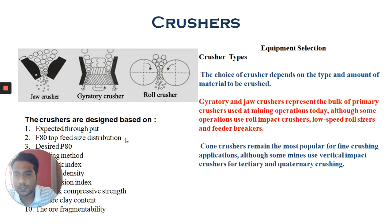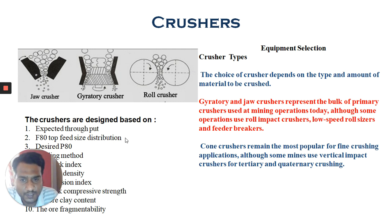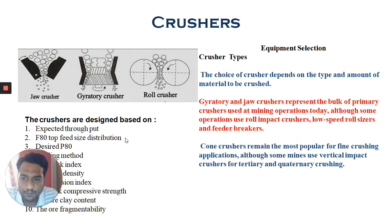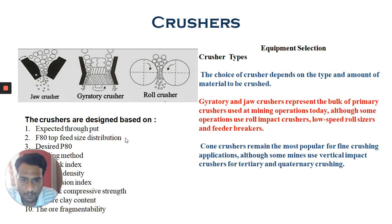This overview covers the crusher types, working principles, and importance in mineral processing, which you may have already seen in earlier semesters. This page will give you a brief idea about the type of crushers and design importance. Basically, jaw crushers, gyratory crushers, and roll crushers have been majorly used in mineral processing for primary crushing operations.